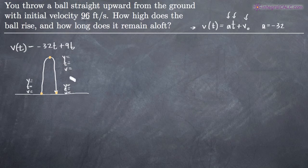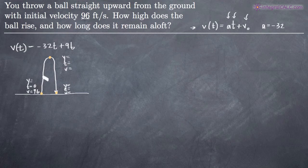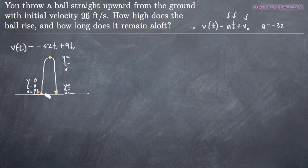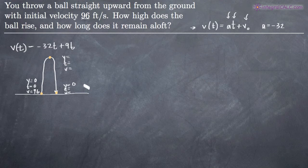There are some things we can fill in right away. We know the initial velocity is 96 feet per second. The initial time t is always going to be zero unless told otherwise — that's the start of the flight. We also know the height is zero because the ball is thrown upward from the ground, so the ground equals a height of zero. The height is also zero when the ball hits the ground, which makes sense.